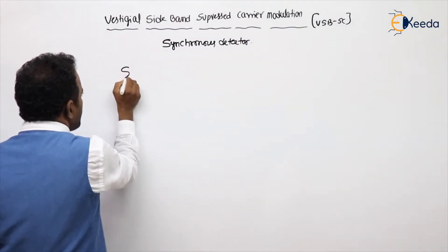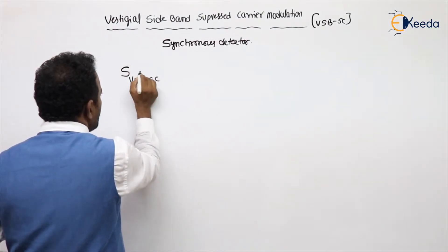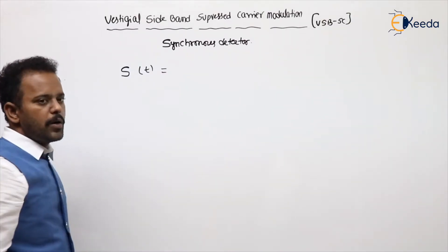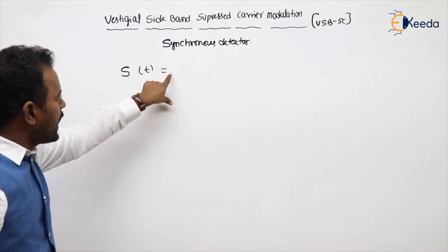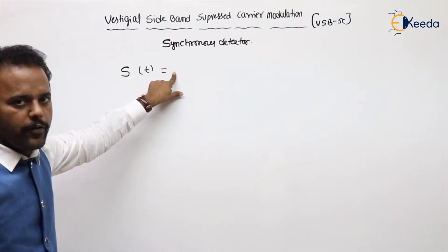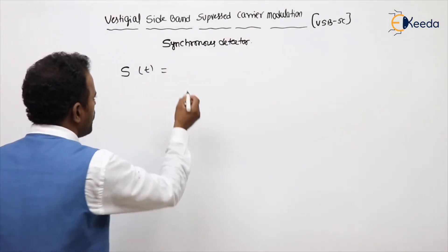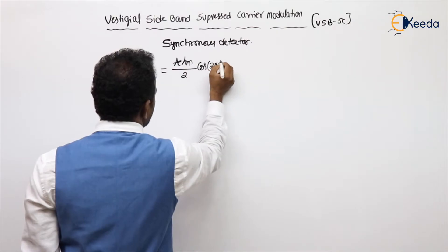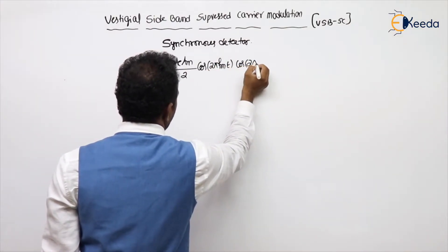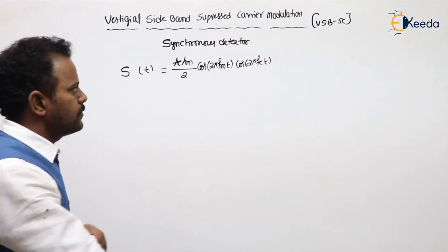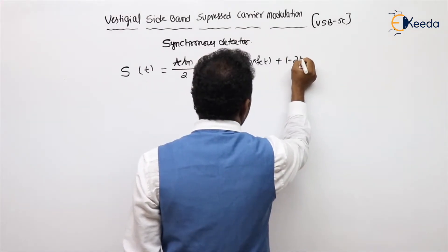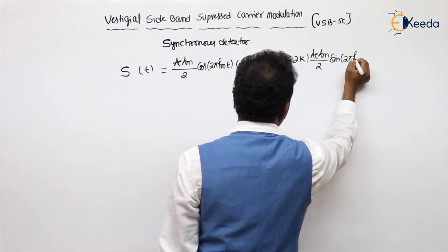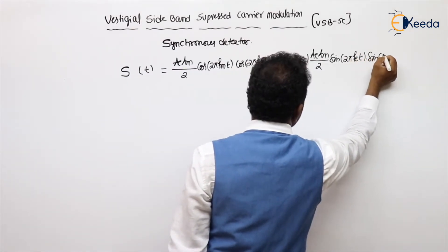And what about the expression of VSBSC? Not only VSBSC, I will bring you a common expression that will be suitable for all modulations including VSBSC. If you are adding additional carrier here AM, and if you make the modifications in a constant, DSB, SSB, VSB, all sideband modulation schemes will come, which is: ACAM by 2 cos 2pi fc t plus 1 minus 2k into ACAM by 2 sin 2pi fc t into sin 2pi fm t.